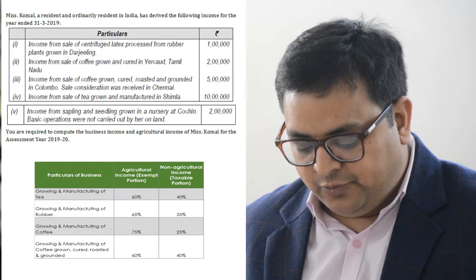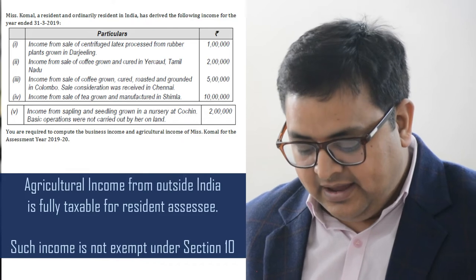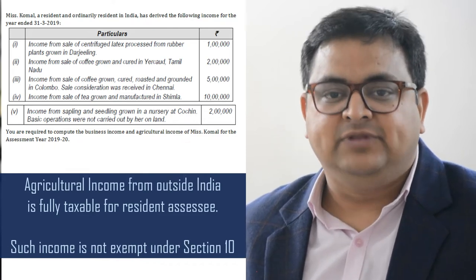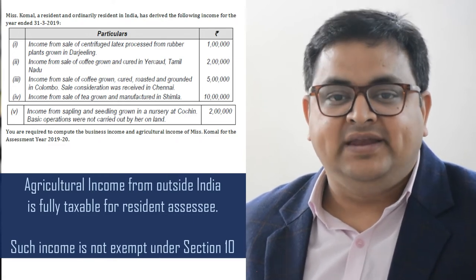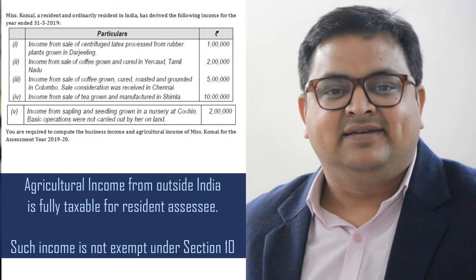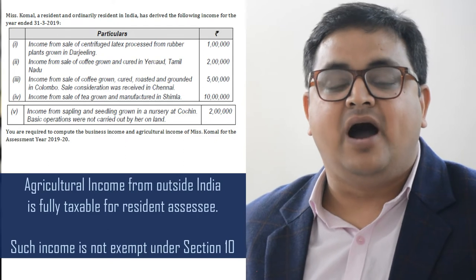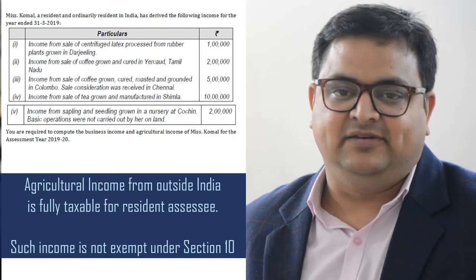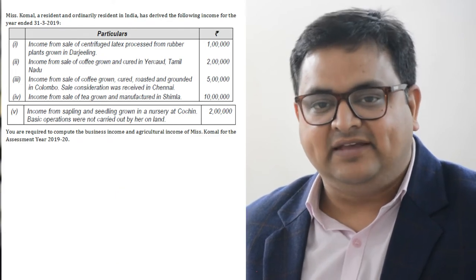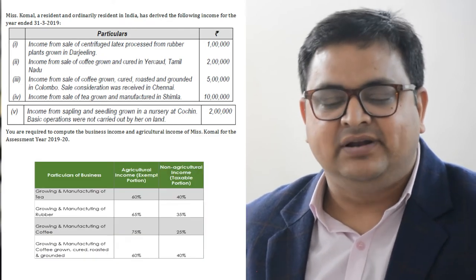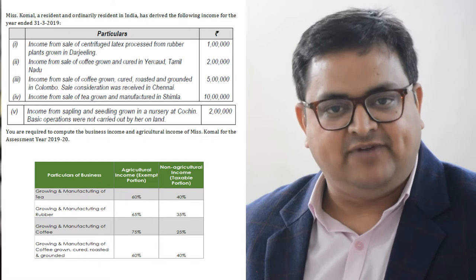The third point says income from sale of coffee grown, cured, roasted and grounded - for this we take 60:40. But this coffee is being grown in Colombo, that is in Sri Lanka. This is a very important point: if you have agriculture income from outside India, it is fully taxable - it is not exempt. So it will be taxable income. This is not agriculture income - 100 percent is going to be non-agriculture income, so it goes to business income: 5 lakh rupees.